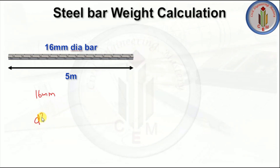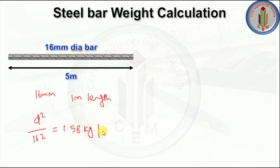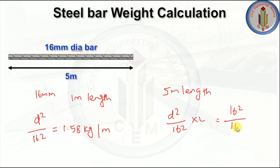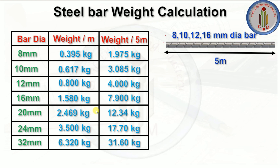Next let's do the same for the 16 mm dia bar. d² divided by 162 — remember, this is the main formula — gives 1.58 kg per meter. For 5 meter length: 16² divided by 162 multiplied by 5 meters gives us 7.9 kg. That is the weight of a 16 mm dia bar for 5 meter length.